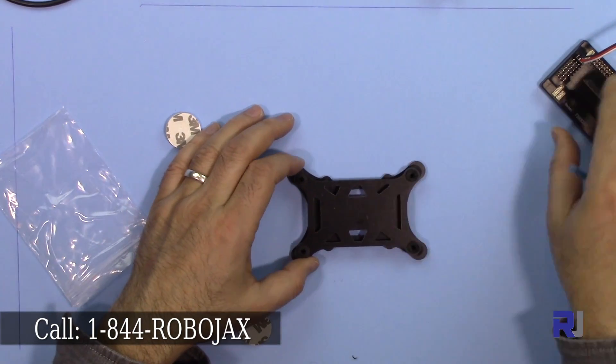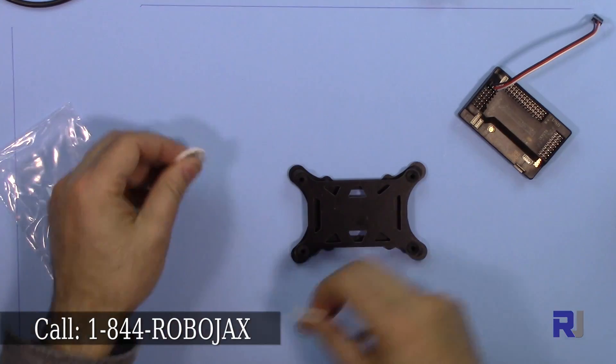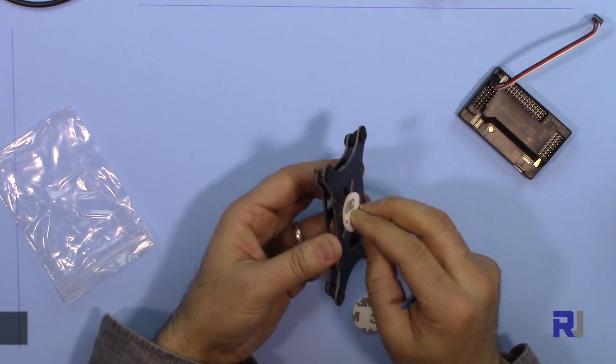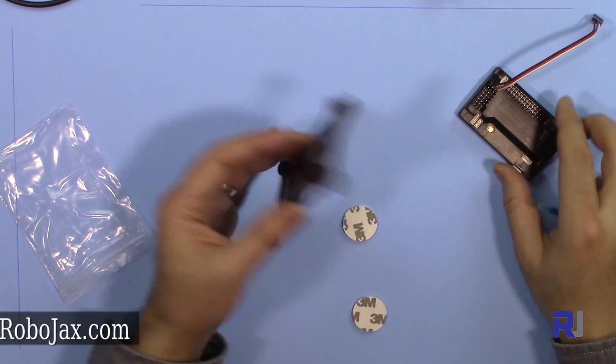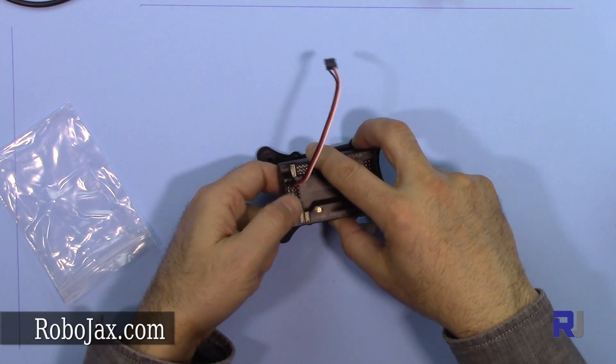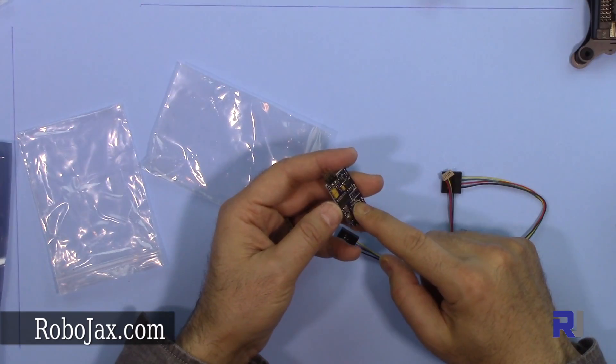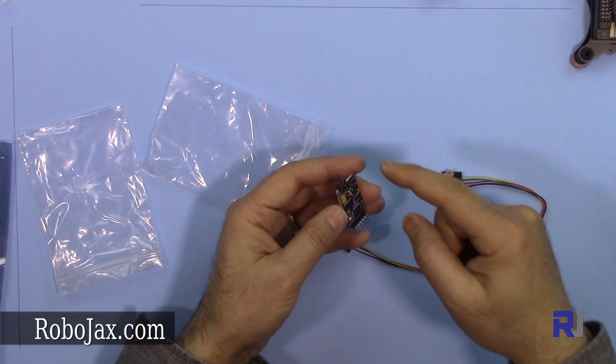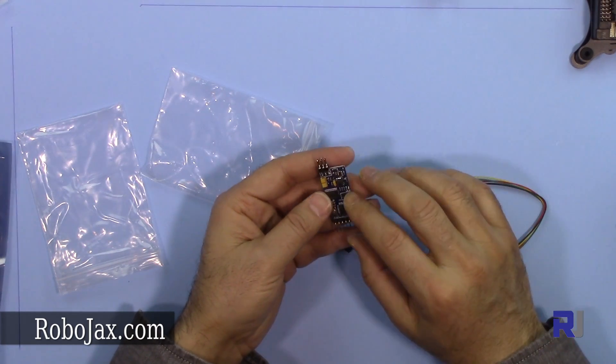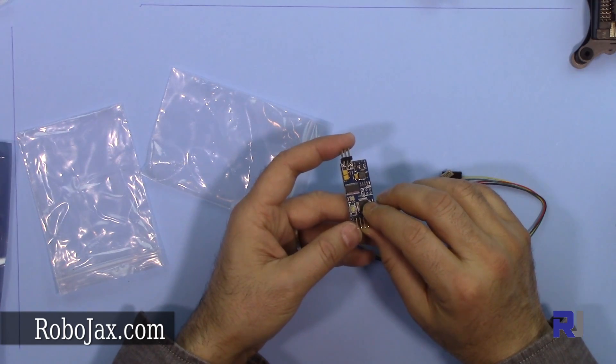As you can see, this is absorbing the shocks very nicely, so nothing will be transferred to the flight controller. We have two adhesive double-sided tapes, one for here if you don't want to screw it on, and also one for the flight controller so you can put the flight controller on top of this.